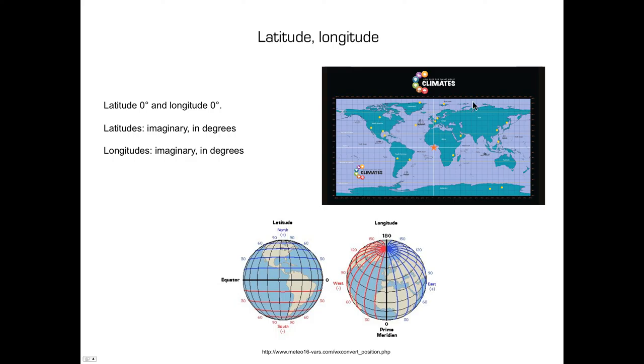Going east increases the longitude from zero degrees to 180 degrees east. Going west increases the longitude from zero degrees to 180 degrees west. The two 180 degrees east and west lines merge on the same meridian in the Pacific Ocean. This line is called the changing date line. Each side is one day away from the other.